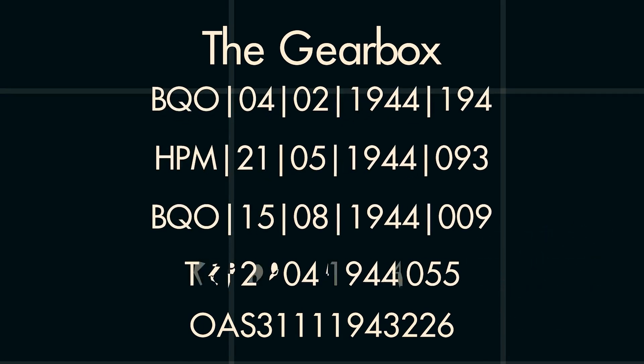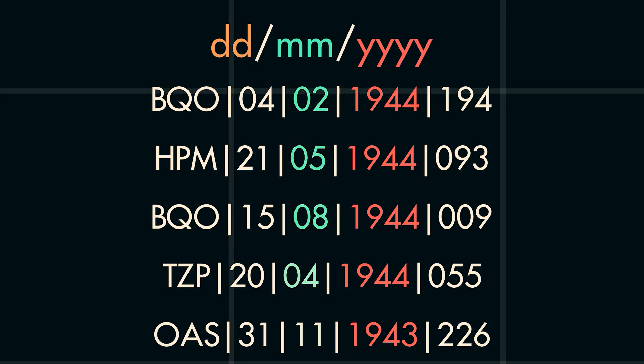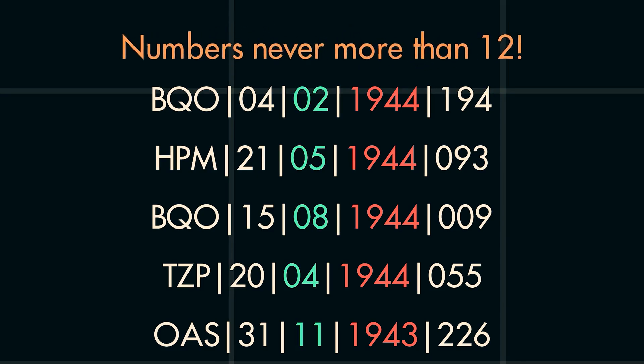Aligning these together, it is immediately apparent that there is a year given in the number, which further leads one to believe that we have a day and a month represented. Germans represent dates as day, month, year, given that the third and fourth numbers concatenated together never go higher than 12, which leads you to expect that these represent the month, while the first two numbers represent the day.